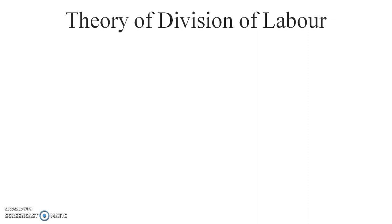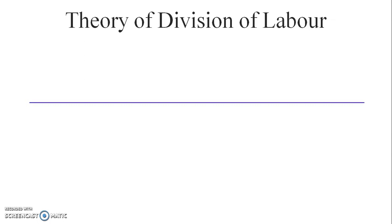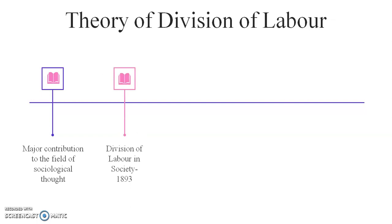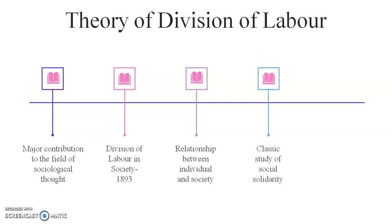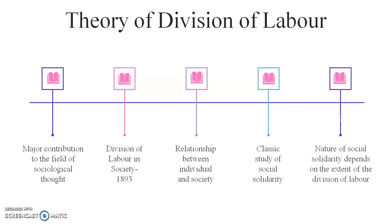The next major contribution of Durkheim is the theory of division of labor, one of his major contributions to sociological thought. His major book, 'Division of Labor in Society' (1893), presents this theory. The theme of the book is the relationship between individual and society, and it is a classic study of social solidarity — meaning unity or harmony in society. Durkheim argued that the nature of social solidarity depends on the extent of the division of labor.